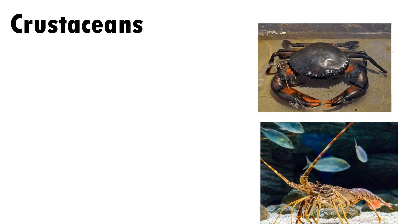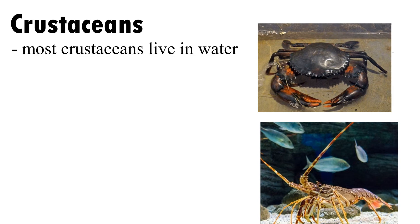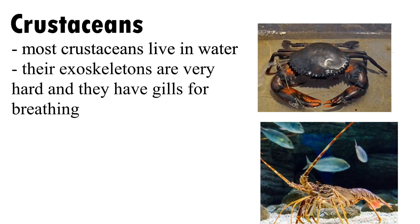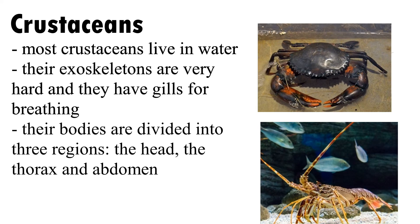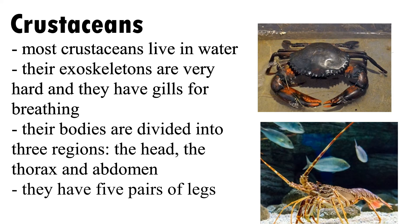Crustaceans: most crustaceans live in water. Their exoskeletons are very hard and they have gills for breathing. Their bodies are divided into three regions: the head, the thorax, and the abdomen. They have five pairs of legs.